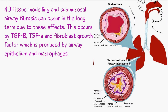Long-term effects of asthma include tissue remodeling and submucosal airway fibrosis. This is because of transforming growth factor beta, transforming growth factor alpha, and fibroblast growth factor, which are produced by the airway epithelium and macrophages in response to chronic inflammation. The overall effect is fibrosis, and this is what is happening in cases of chronic asthma.